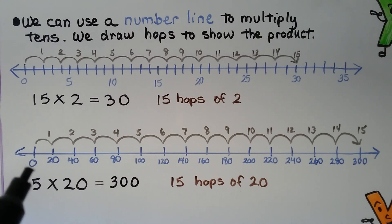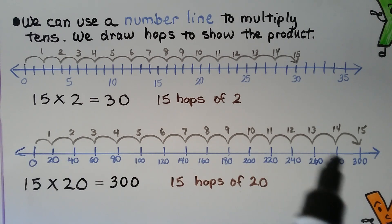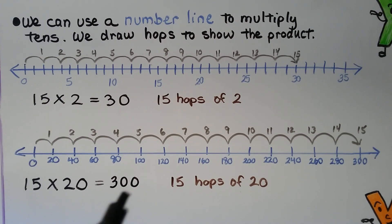We can use a number line that's in increments of 20 to do 15 times 20. We do 15 hops of 20, and we land at 300.